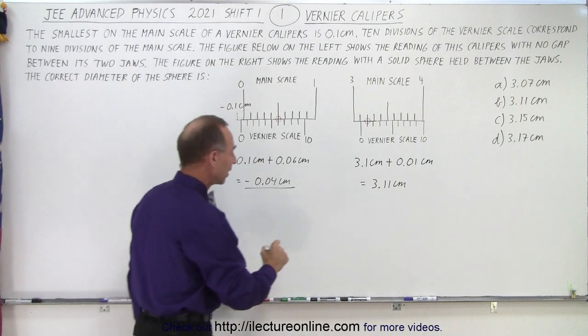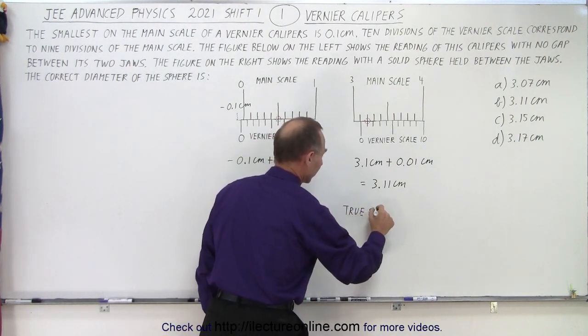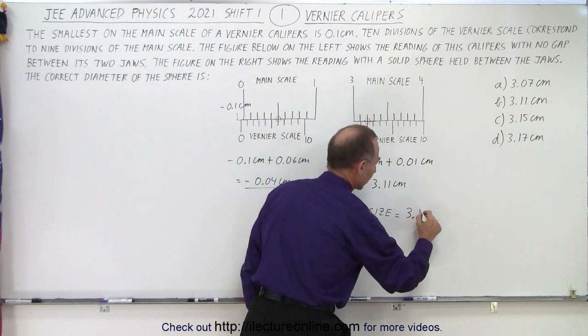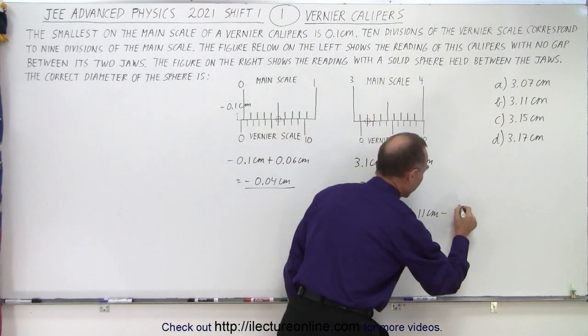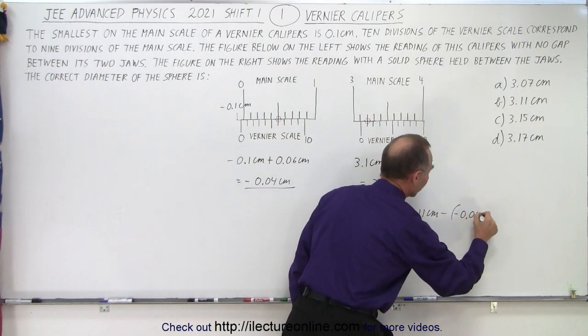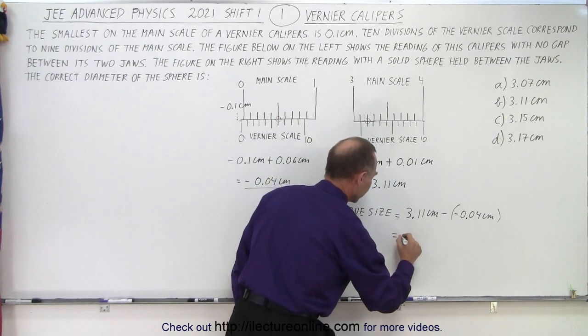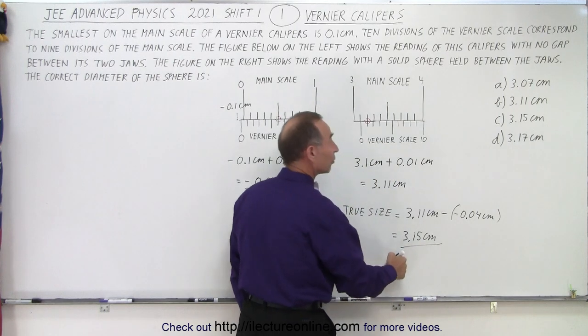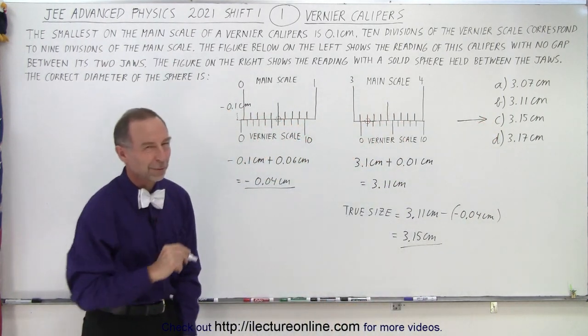So how do we adjust that? So the true size, that's the best way to say it, the true size is equal to 3.11 centimeters minus the zero reading which is a minus 0.04 centimeters. The negative times a negative becomes a positive, so this is 3.15 centimeters, and notice that would be answer C which is the correct answer.